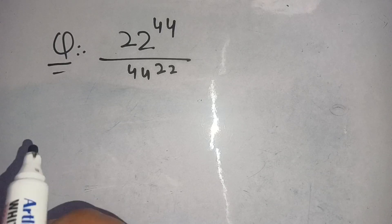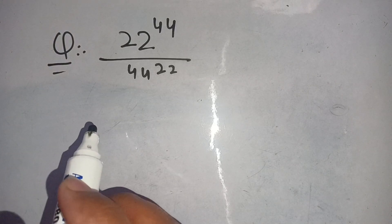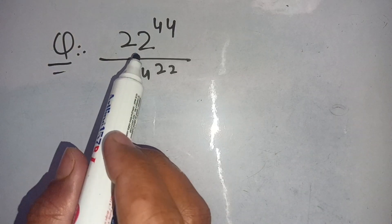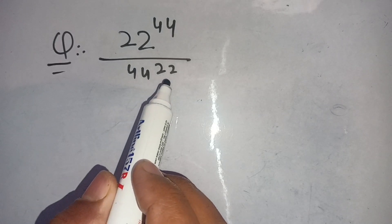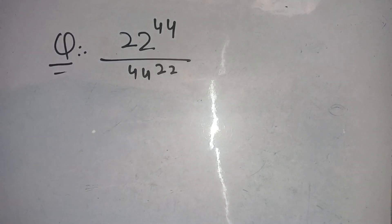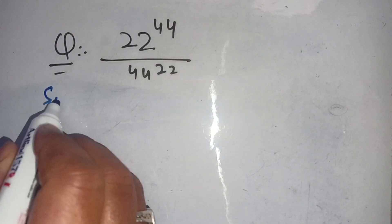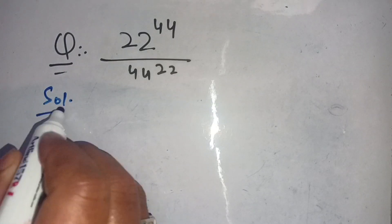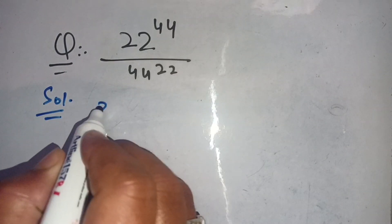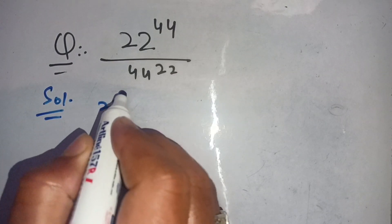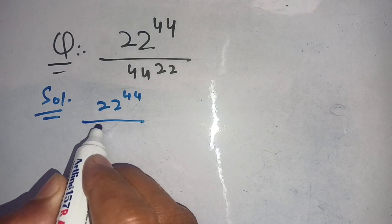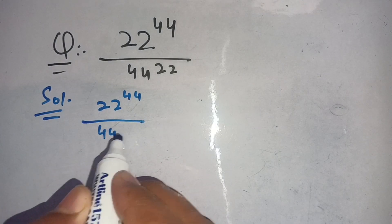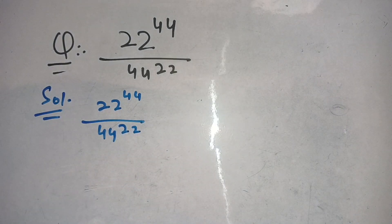We are going to solve this numerical problem: 22 power 44 divided by 44 power 22. Let us solve this. First of all we can write down its solution as 22 power 44 divided by 44 power 22.